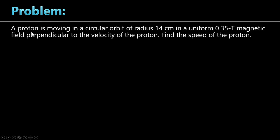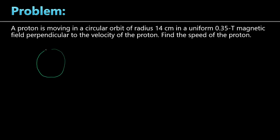Next problem. Problem 3 — this time a proton. A proton is moving in a circular orbit of radius 14 cm in a uniform 0.35 Tesla magnetic field, which is perpendicular to the velocity of the proton. Find the speed of the proton. We have learned that if the velocity vector is perpendicular to the magnetic field vector, the charged particle will move along a circular path.